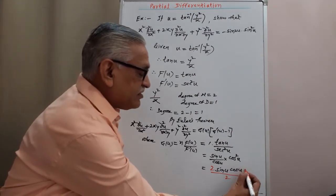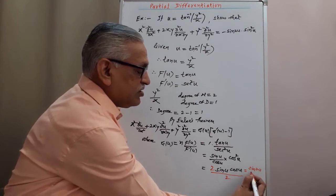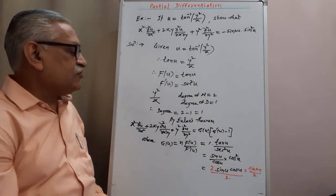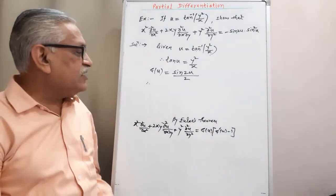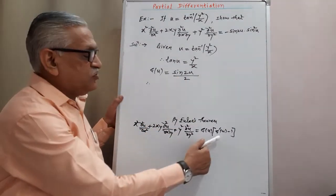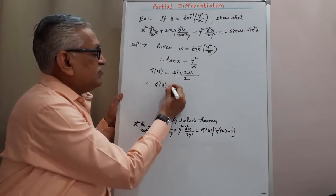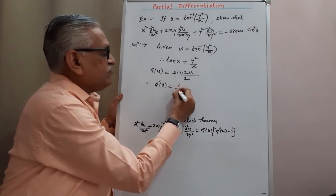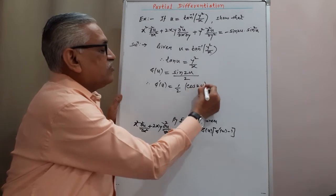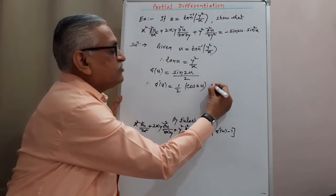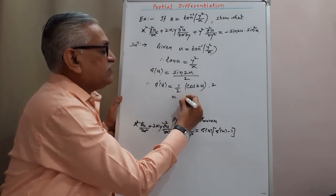So we get 2·sin(u)·cos(u) / 2 = sin(2u) / 2. Therefore, g(u) = sin(2u) / 2. Differentiating with respect to u to obtain g'(u): g'(u) = (1/2) · derivative of sin(2u) = (1/2) · cos(2u) · 2 = cos(2u), where the 2s cancel.